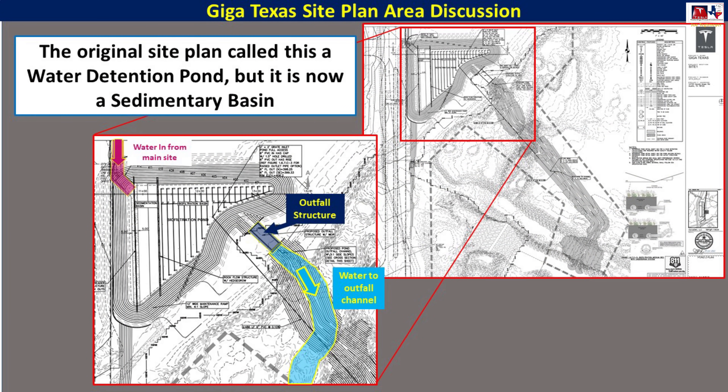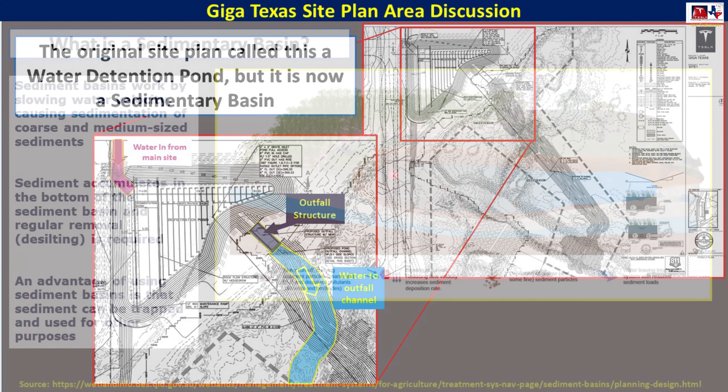The original site plan from September 2020 called this a water detention pond, but since then it's changed significantly. Here are two images from the site plan and I've overlaid how the basic water flow will occur for this to operate.